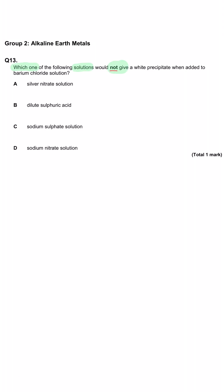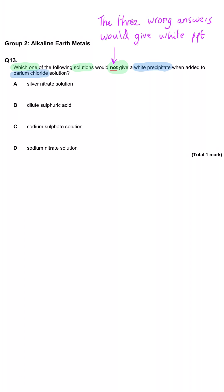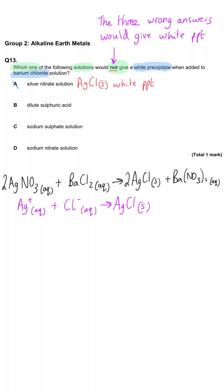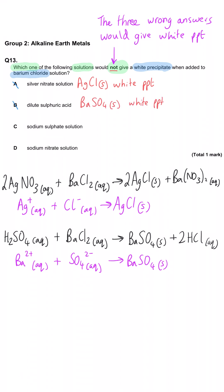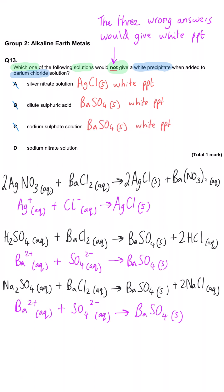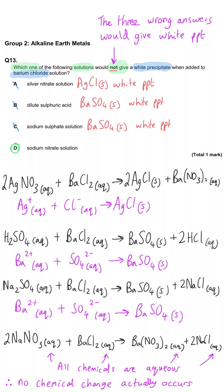Which solution would not give a white precipitate when added to barium chloride? A, silver nitrate — this gives a white precipitate of silver chloride. B, dilute sulphuric acid — the sulphate ion reacts with barium to give barium sulphate, a white precipitate. C, sodium sulphate — also contains the sulphate ion, again producing barium sulphate. So D must be the correct answer: adding sodium nitrate to barium chloride gives sodium chloride and barium nitrate, both colourless solutions, so no precipitate forms.